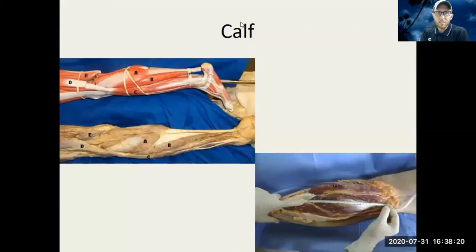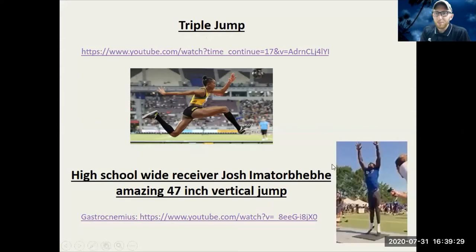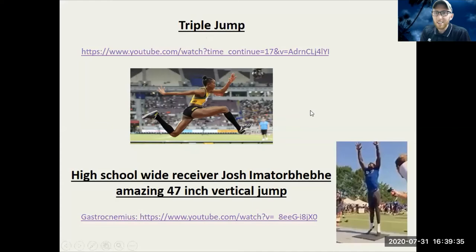The gastrocnemius is the most superficial muscle on the back of the knee — it's what you really see when you see someone's calf muscle. The soleus, stroll with the soleus, also plantar flexes and inserts into the calcaneal or Achilles tendon, but its origin is inferior to the knee joint. Here we see the triple jump and the vertical jump, which is extremely popular in the football combine, demonstrating individuals using their gastrocnemius for explosive activities.